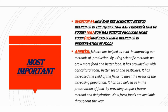We grow more food and better food — ہم زیادہ اور بہتر کھانا پیدا کرتے ہیں. Science has provided us with agricultural tools — زراعت میں استعمال ہونے والے instruments — better seeds — اچھی پیداوار رکھنے والے بیج — and pesticides — کڑے مکوڑے ختم کرنے والی ادویات. It has increased the yield of the fields to meet the needs of the increasing population — بڑھتی ہوئی آبادی کی ضروریات پوری کرنے کے لیے۔